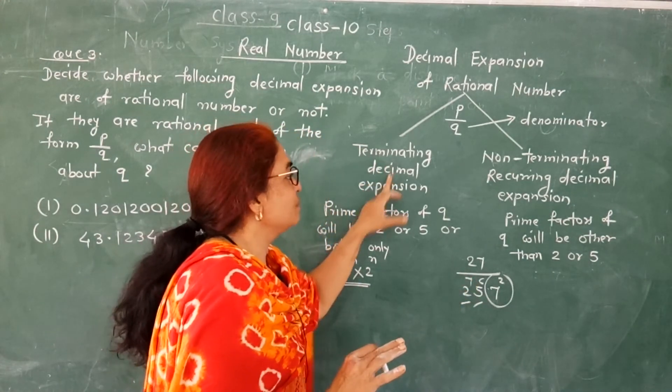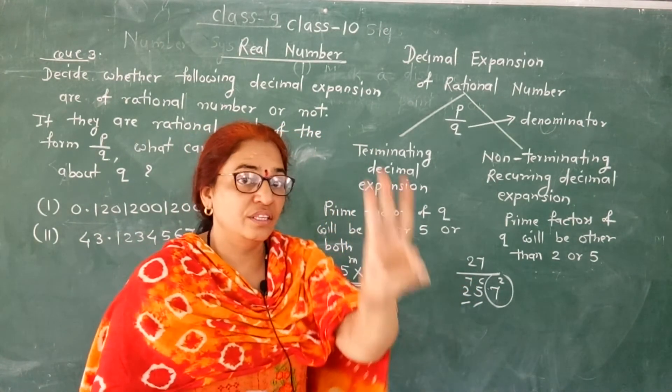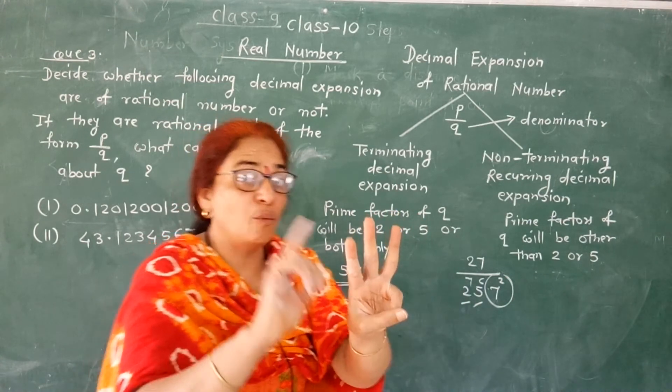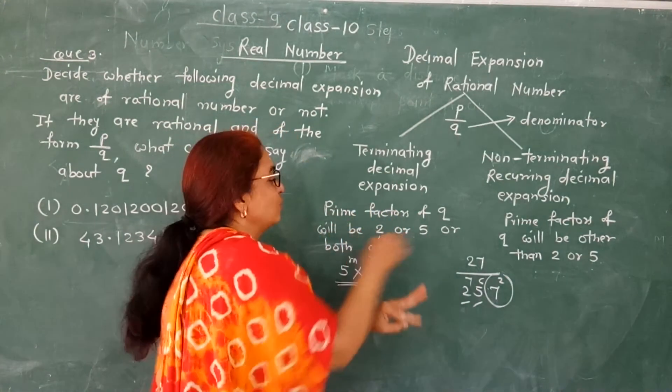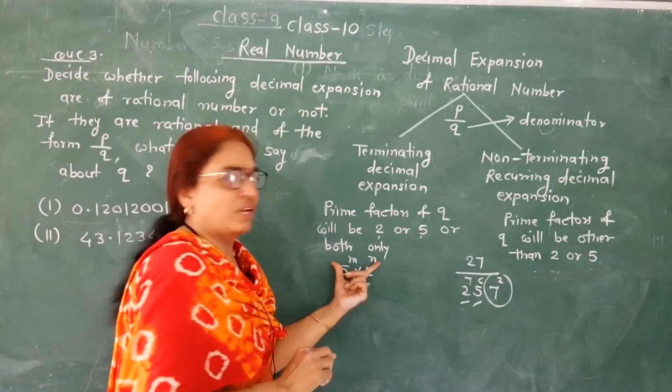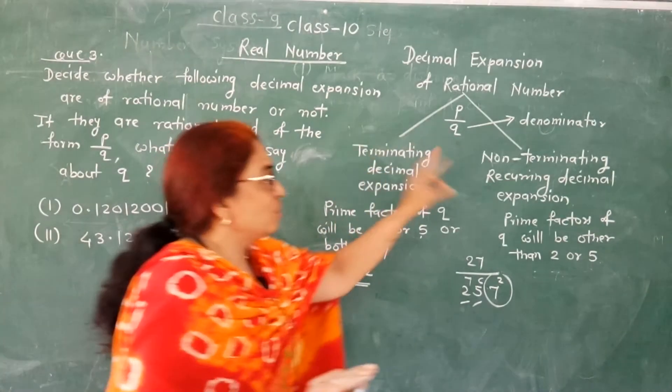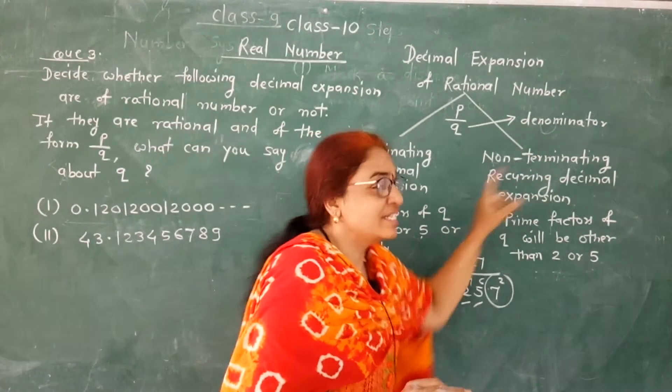We have seen one example: 27 upon 2 to the power 7, 5 to the power 6, 7 to the power 2. This is non-terminating recurring decimal expansion because of the factor 7. Three things should be clear about the denominator's prime factors.